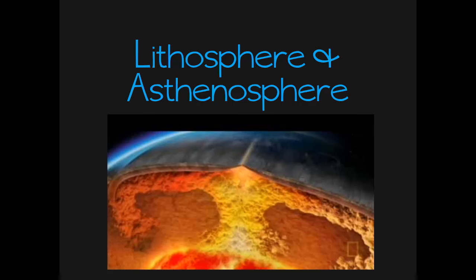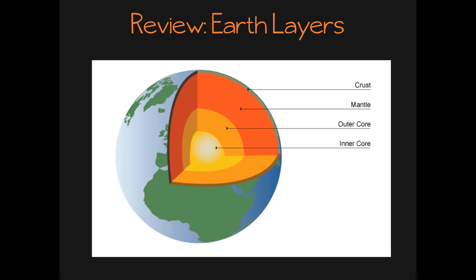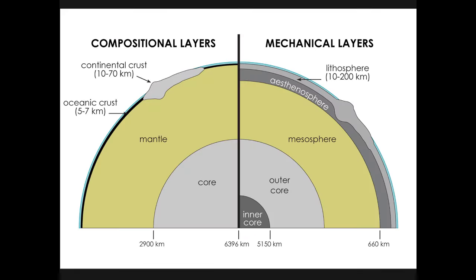You remember from our earlier Earth layers lesson that one way to divide the earth is into the crust, the mantle, the outer core, and the inner core. But scientists have another way to divide Earth — very similar but just a little bit different. For today's lesson we're not going to worry about the core at all; we're only going to be concentrating on Earth's rocky layers.